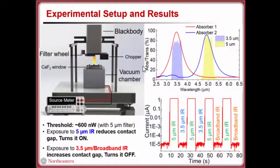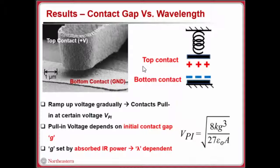But it doesn't conclusively prove that it's indeed because of the contact gap increasing upon exposure to the rejected wavelengths. To conclusively prove that it's because of this bi-absorber design increasing the contact gap, we use this technique of voltage pull-in.